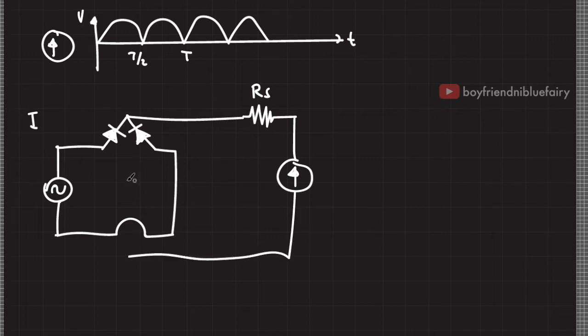But before doing that, during the first half cycle, the current flows this way. If I connect this back to the AC source and during the first half cycle, I don't want the current to flow this way. So I'll block it with a diode.